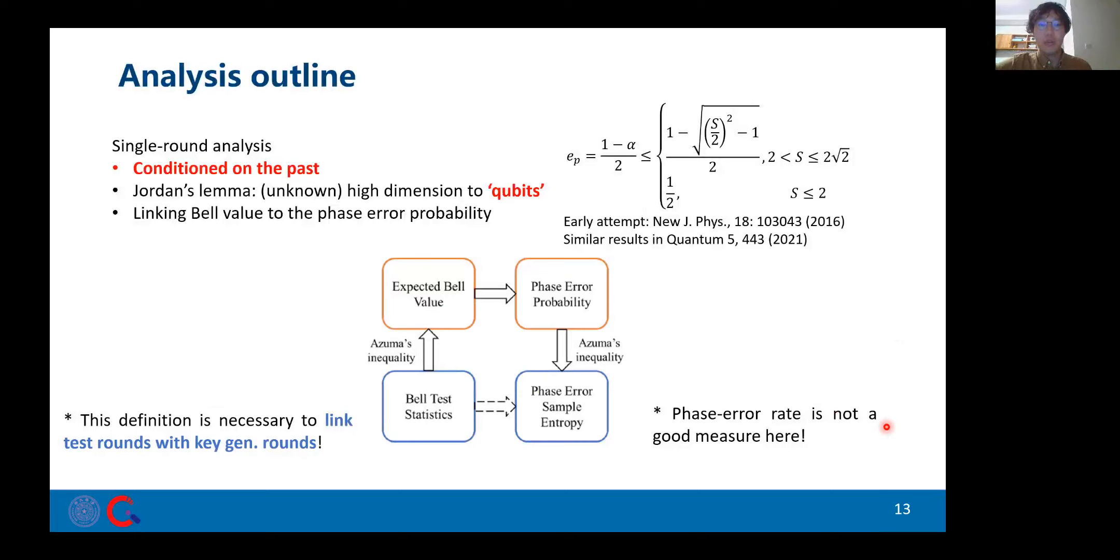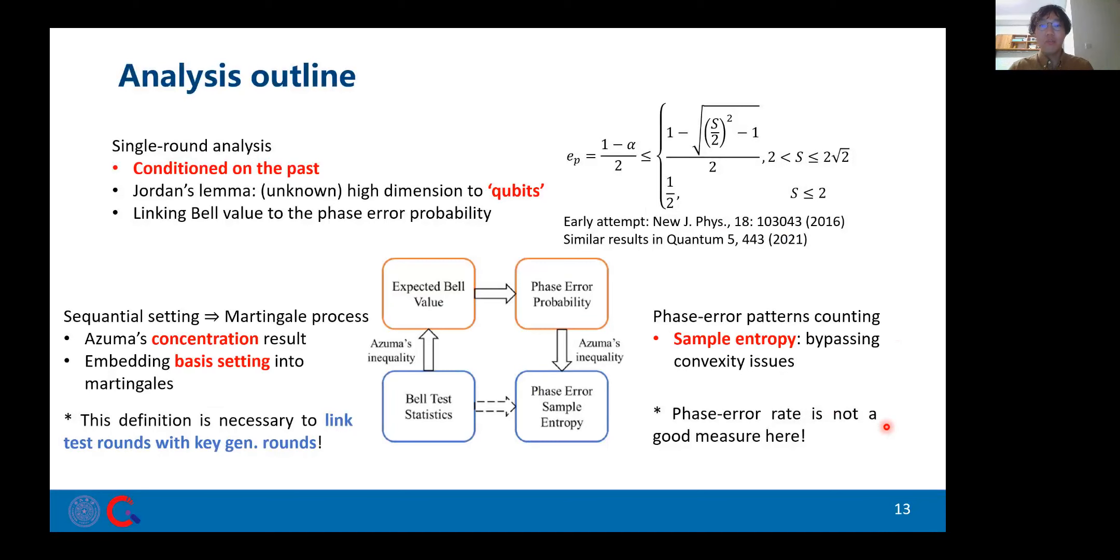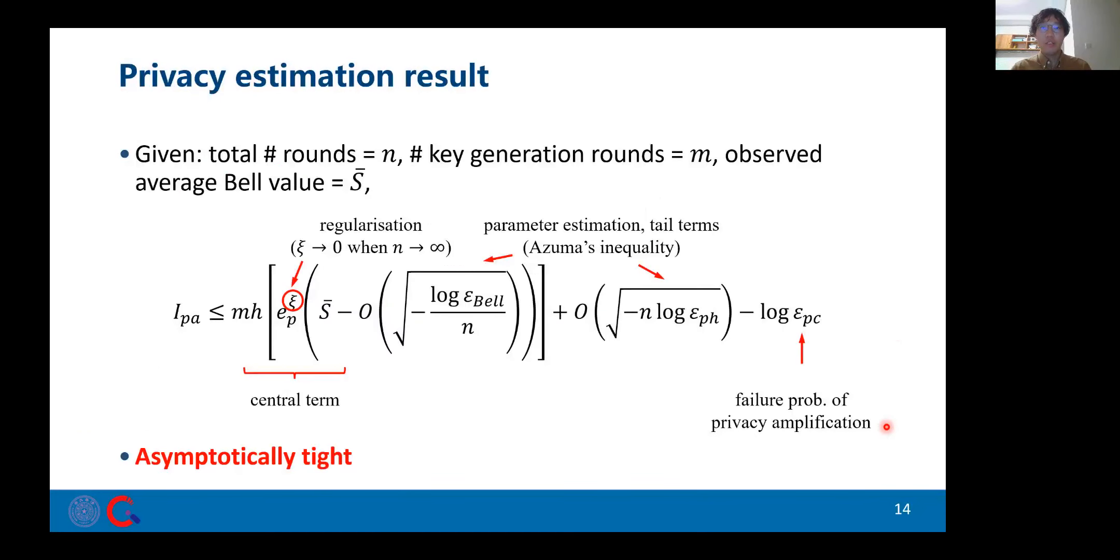Afterwards, we take the complementarity approach, and here is a sketch for the analysis and all the important intermediate results. In the end, the key privacy formula is something like this, which converges to the central term with large data sizes and gives an asymptotically tight performance.